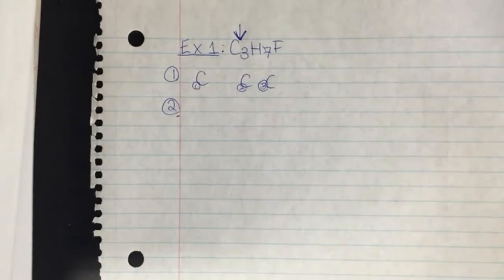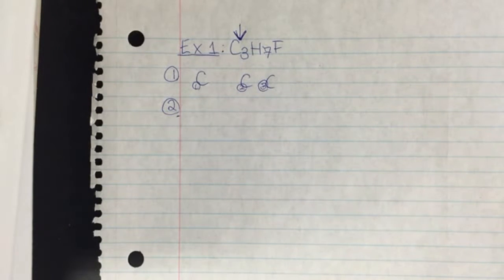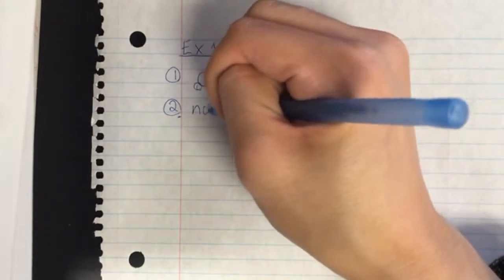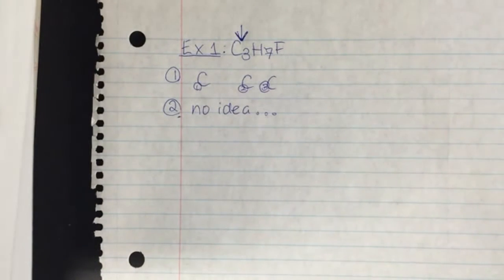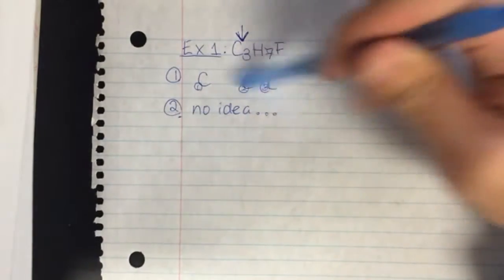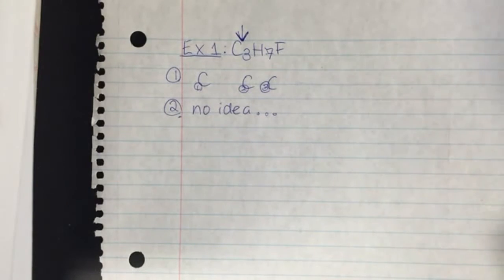In step 2, I have to use the number and the ending of the main function group to draw the correct function group on the correct numbered carbon. But I don't have a chemical name — only a chemical formula. So you can actually skip step 2 — write 'no idea' because you have no idea what the actual number and the function group ending is. You don't know what the function group is or where it goes.